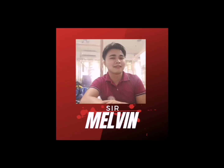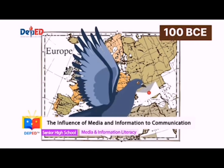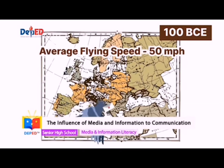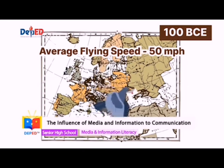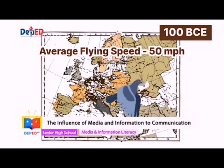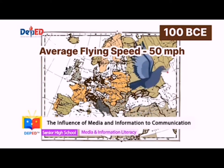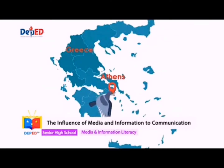Did you know that as early as the first century BCE, people started breeding messenger pigeons in Europe? With an average flying speed of 50 miles per hour and an innate ability to find their way home across long distances, pigeons delivered the results of the first Olympics in 776 BCE, traveling from Athens, Greece to surrounding villages to announce the winners.